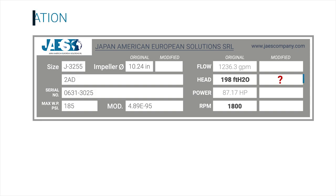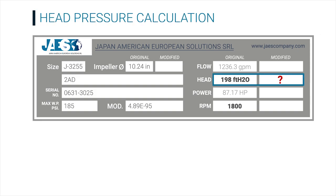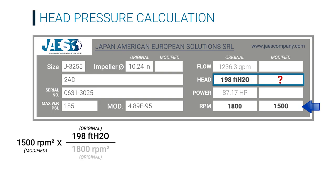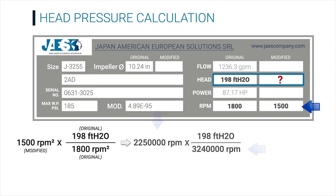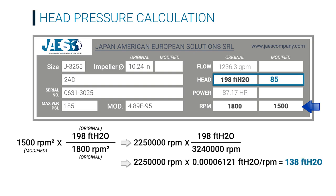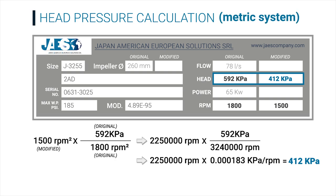If we want to find out the value of the new head pressure when we change the RPM from 1800 to 1500, we need to square the value of the modified RPM and multiply it by the division of the original head pressure — 198 feet of water — and the original RPM value, squared as well. Make sure to square both RPM values. The result is 138 feet of water. Using the metric system, the original head pressure value is in kPa and the resulting new head pressure is 412 kPa.